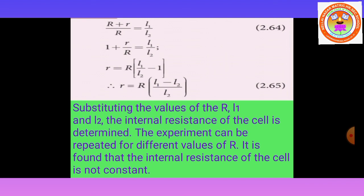The experiment can be repeated for different values of R. It is found that the internal resistance of the cell is not constant for various values of the external resistance. For each value, balancing lengths L1 and L2 are measured and substituted into the formula to find the internal resistance. Thank you, students.